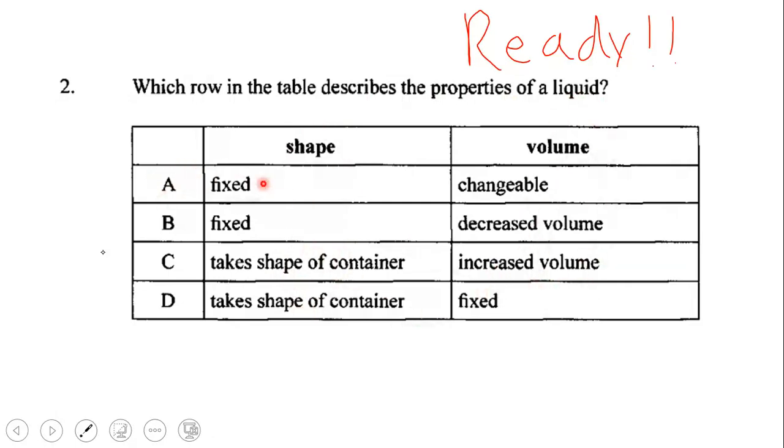So is it A, fixed shape, changeable volume? Is it B, fixed shape, decreased volume? Is it C, takes shape of container, increased volume? Or is it D, takes shape of container and fixed volume?